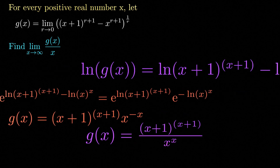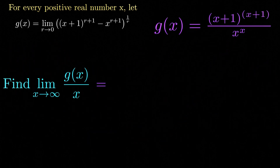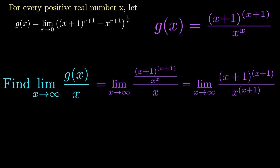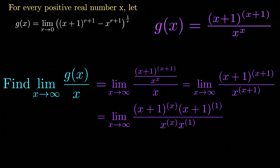Now we can evaluate the limit as x goes to infinity of g of x divided by x. Dividing g of x by x, we have the limit as x approaches infinity of x plus 1 raised to x plus 1 divided by x raised to x plus 1. All we've done is multiply the numerator and denominator by x raised to x.